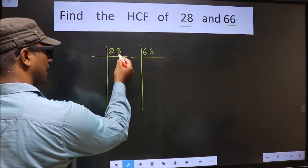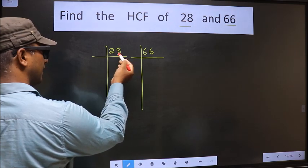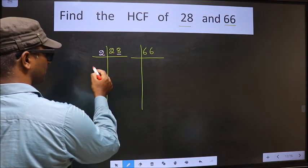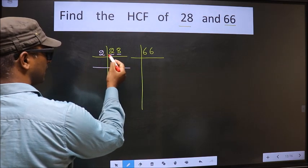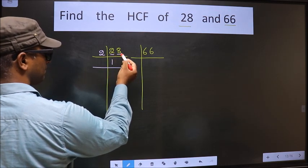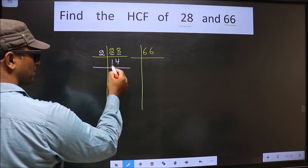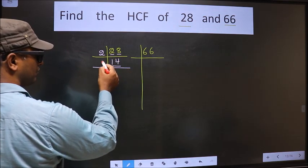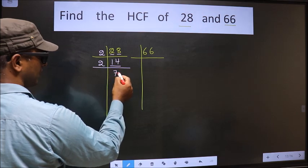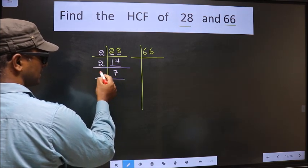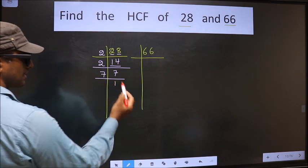For this number, the last digit is 8 which is even, so we take 2 here. The first number is 2. When do we get 2 in the 2 table? 2 times 1 is 2. The other number is 8. When do we get 8 in the 2 table? 2 times 4 is 8. Now here we have 14. 14 is 2 times 7 is 14. Now we have 7. 7 is a prime number, so 7 times 1 is 7.